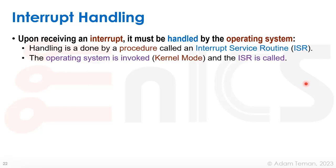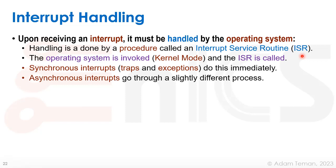So how do we handle interrupts? When we receive an interrupt, the operating system must handle it via a procedure called an Interrupt Service Routine, or ISR. Any procedure run to handle an interrupt is called an ISR — it's a special procedure, an interrupt handler. The OS is invoked, we move into kernel mode, and we call the ISR. For synchronous interrupts — traps and exceptions — we do this immediately, because either the software needs a system call or it did something illegal like dividing by zero and cannot continue.